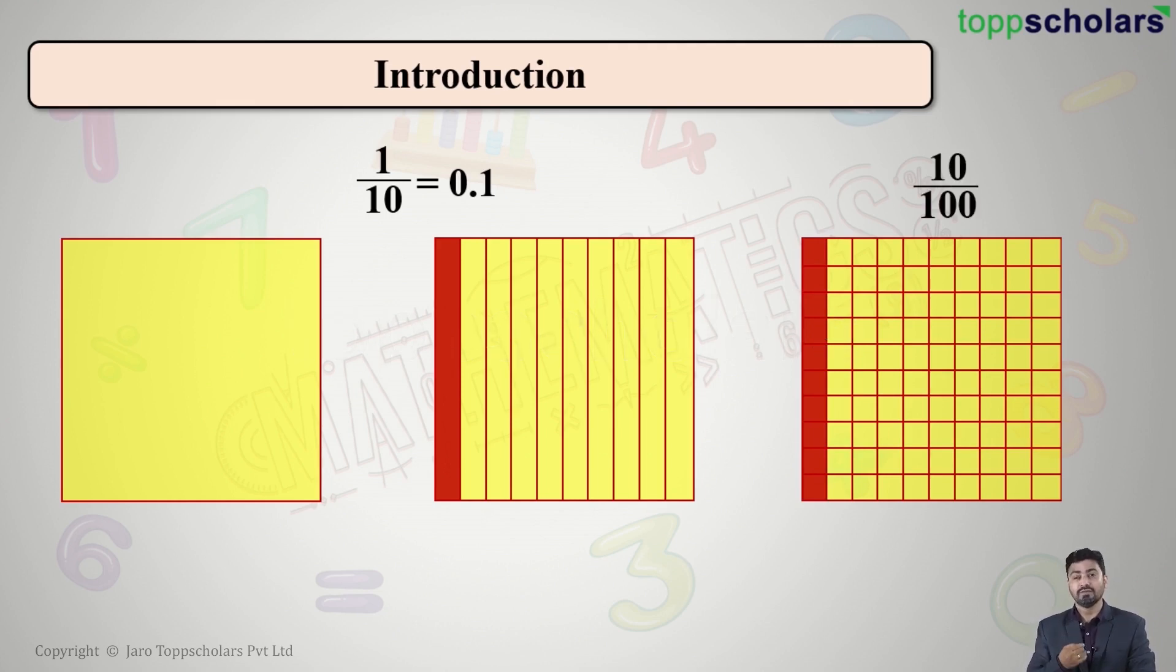Again, if I write this in decimal form, I will be getting 0.01 because we have two zeros in the denominator. So I shift my decimal point from right side of 0 to 2 places on the left, which gives me 0.10.